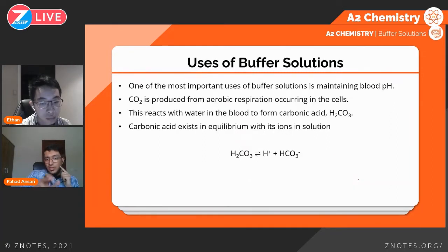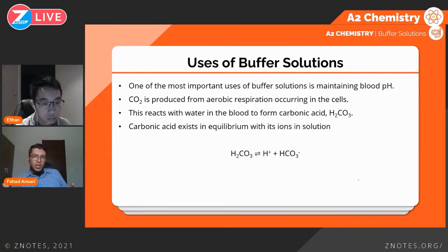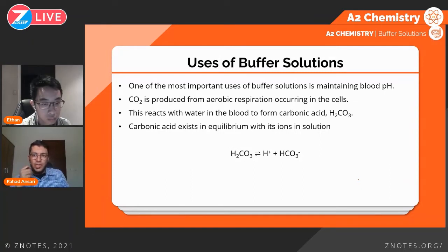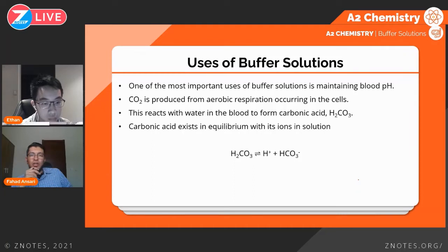Now, uses of buffer solutions. One very important use of a buffer solution is actually in your blood — maintaining blood pH is very important. You have enzymes in your body that work at an optimum pH and temperature. If you change that by even a little bit, the enzymes become denatured and do not perform their functions, especially digestion. So if you eat, drink, or have something injected into your body with a slightly higher or lower pH, the buffer solution in your blood ensures that the pH does not go out of whack.